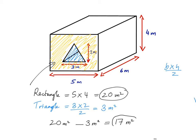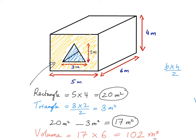Now that I have the cross-sectional area, I need to multiply that by the width of the shape. The width of the shape is 6 meters. So the volume is equal to 17 times 6. I can do this in my head: 10 times 6 is 60, 7 times 6 is 42, and 60 plus 42 is 102 meters cubed. The units of volume are always cubed, so the volume of this compound 3D shape is 102 meters cubed.